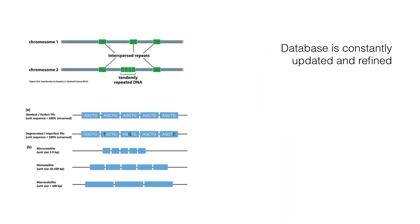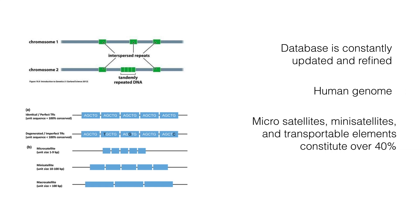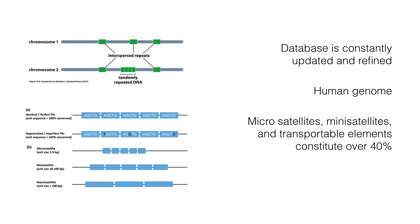These databases are constantly updated and refined. In the human genome, repeats like microsatellites, mini-satellites, and transposable elements constitute over 40% of the entire sequence. While in corn, the repetitive content is as high as 90% due to the expansion of transposable elements.